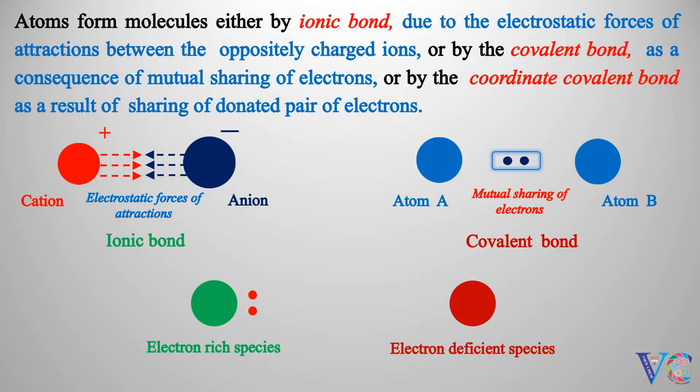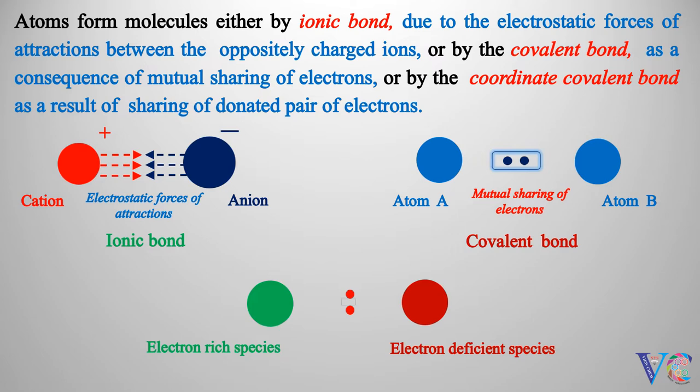Electron-rich species, electron-deficient species. Electron-rich species donates electron pair for sharing. Formation of coordinate covalent bond.